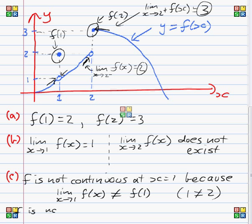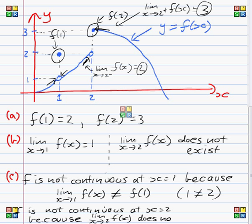F is not continuous at x equals 2 because, and now we have a whole different reason for this. The reason that the function is not continuous at x equals 2 is because the limit as x tends to 2 does not exist.